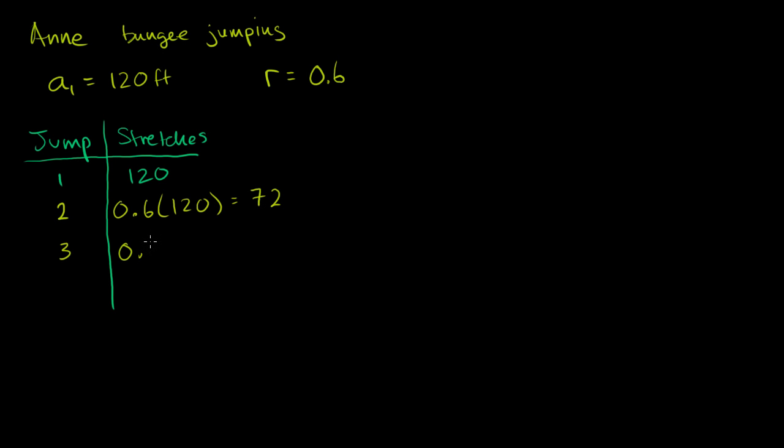And then on the fourth jump, notice over here, so on the fourth jump, we're going to have 0.6 times 0.6 times 0.6 times 120. 60% of this jump. So every time we're 60% of the previous jump. So if we wanted to make a general formula for this, just based on the way we've defined it right here, so the stretch on the n-th jump, what would it be?